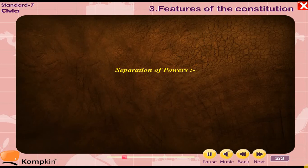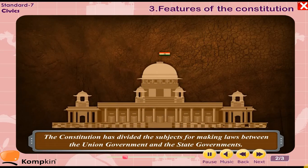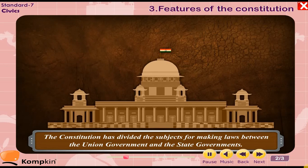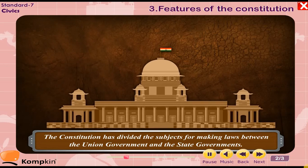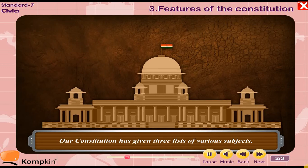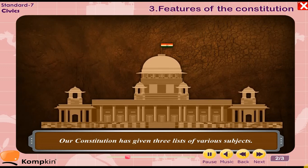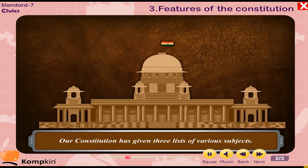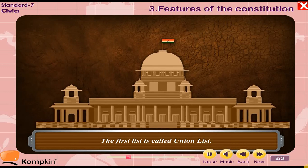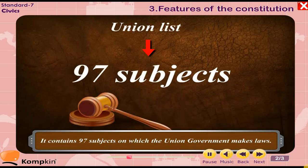Separation of powers: The constitution has divided the subjects for making laws between the union government and the state governments. Our constitution has given three lists of various subjects. The first list is called the union list, which contains 97 subjects on which the union government makes laws.